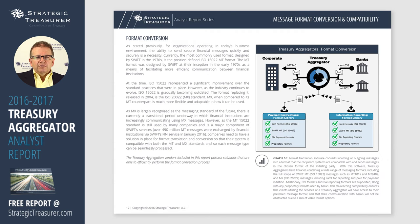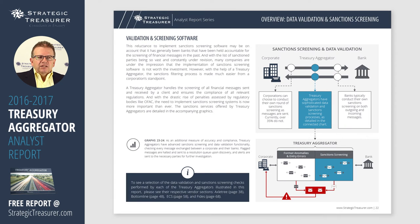Second is data transformation. This is the process of taking data — it might be in a fixed file format or a delimited file format — and putting it into the proper format to originate those payments, whether it's a wire transfer format like an MT101 or one of the newer XML formats. And finally, there are some data security elements provided by the aggregator, such as sanction screening for parties that are not to receive funds.